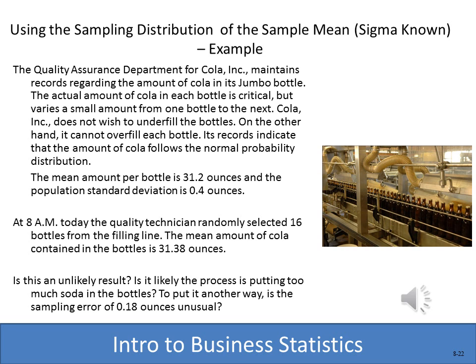Here's our example: a cola company has historically found that the mean fill amount per bottle is 31.2 ounces (population mean μ), with a population standard deviation σ of 0.4 ounces. At 8 o'clock, they randomly selected 16 bottles and found the sample mean X-bar was 31.38 ounces. They want to know if this is within tolerance — specifically, what is the probability of getting that sample mean?